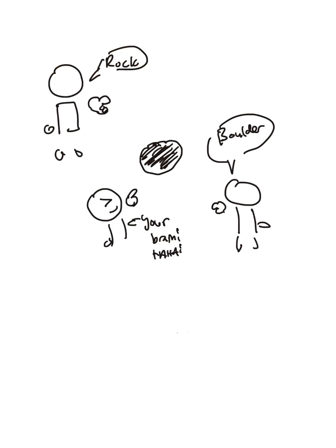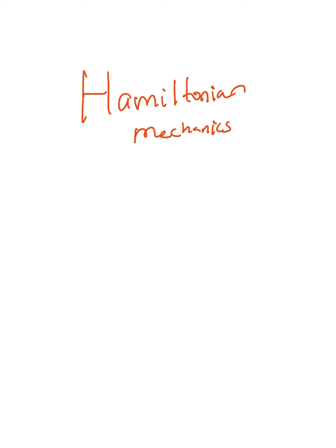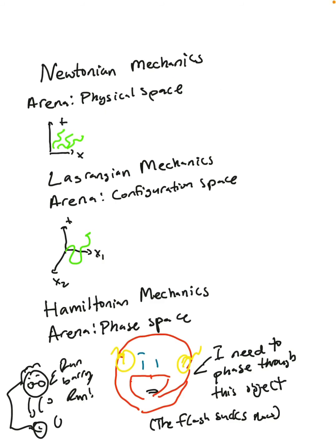Now it's time to level things up a bit, and talk about Hamiltonian mechanics. We know that Newtonian mechanics is just classical mechanics in physical space. Lagrangian mechanics is classical mechanics in configuration space, where we add an axis for each particle.